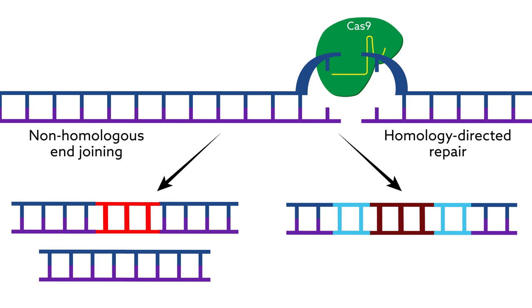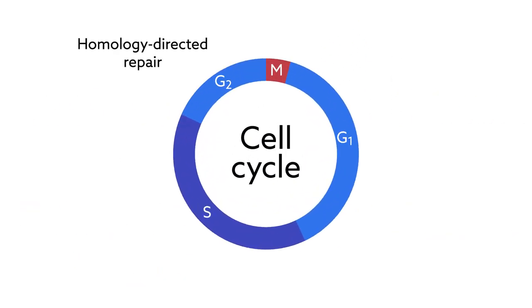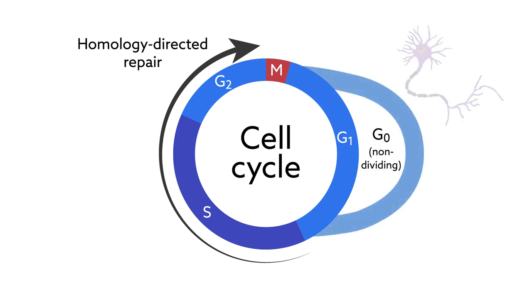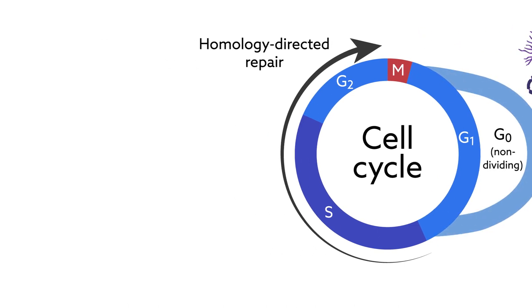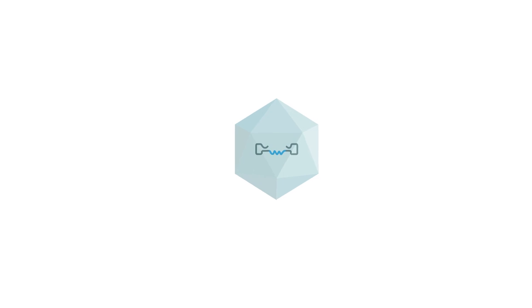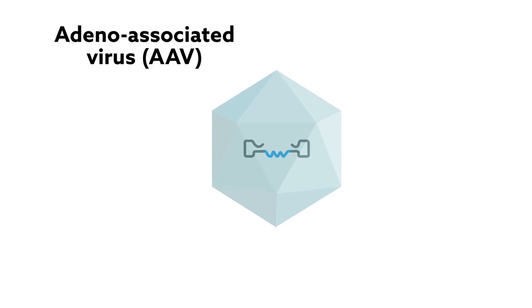Unfortunately, because homology-directed repair has been thought to only happen in the S and G2 phases of the cell cycle, this more desirable method does not work in post-mitotic cells, such as neurons in the brain. To overcome this problem, neuroscientists added adeno-associated virus, or AAV, to the mix.